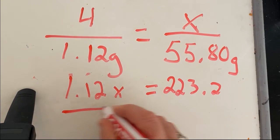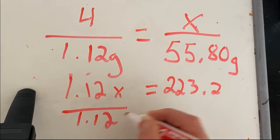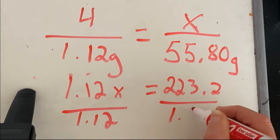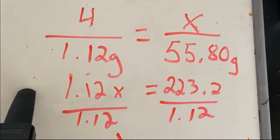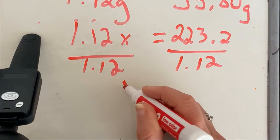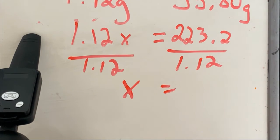You simply divide this side, send this side. So x will equal 223.2 divided by the mass of the four.